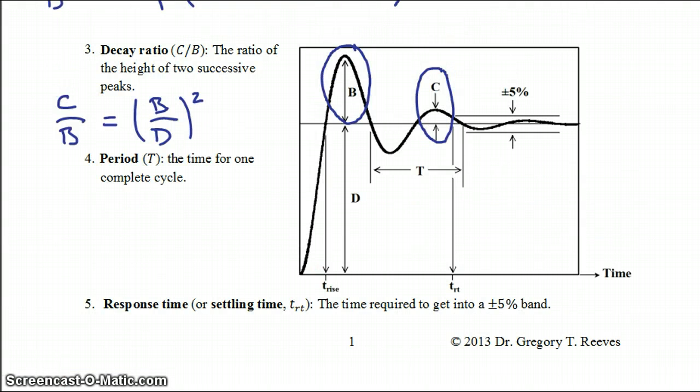Now the fourth parameter that we're going to talk about is the period, which is just the time for one complete cycle, which is a time distance from this point to this point, or any two points that are the same place in your oscillation curve. Now the period T can also be solved for analytically. And that's going to be equal to 2 pi times your natural period tau n divided by the square root of 1 minus your damping factor zeta squared.